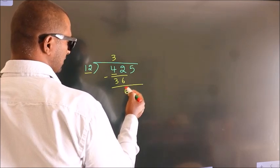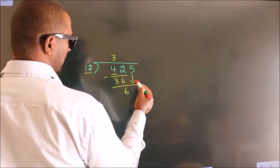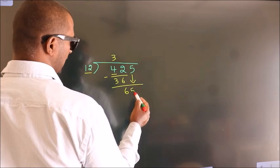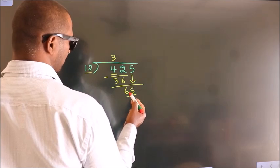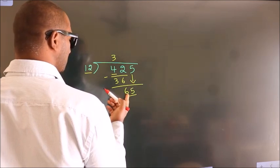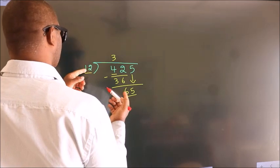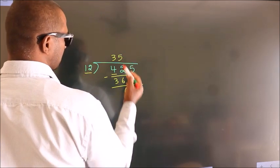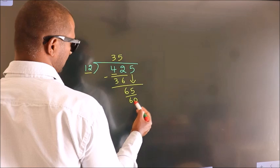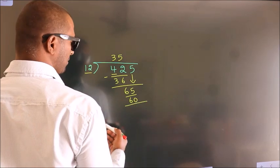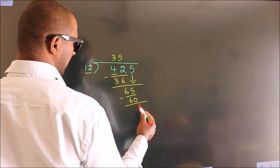After this, bring down the beside number. So 5 down, giving us 65. A number close to 65 in the 12 table is 12 fives, 60. Now we subtract and get 5.